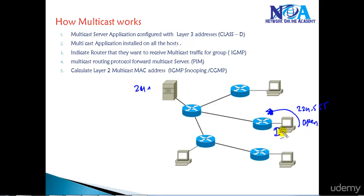This is done by a protocol called IGMP — Internet Group Management Protocol. We'll talk about this protocol in more detail in the next sessions, but here I'm just giving a quick overview of all the steps that happen when multicast traffic is sent from the source to the receiver.